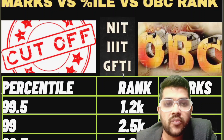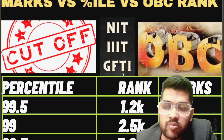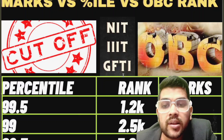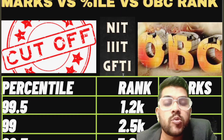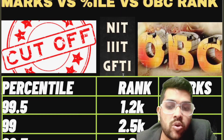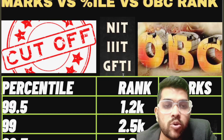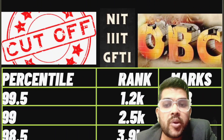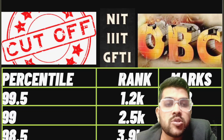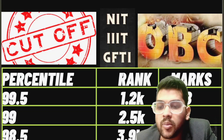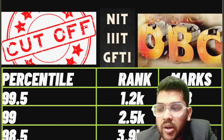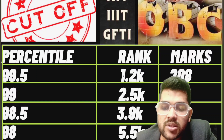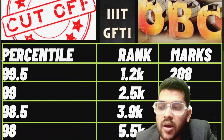For 99 percentile, 175 marks are required and your OBC rank will be 2,500. For 99.5 percentile, the OBC rank was 1,200. Note these are OBC ranks, not CRL or general ranks — for general rank, watch my general video coming soon on this channel. For 98.5, 160 marks are required with a rank of 3,900. For 98 percentile, 150 marks are required with a rank of 5,500.